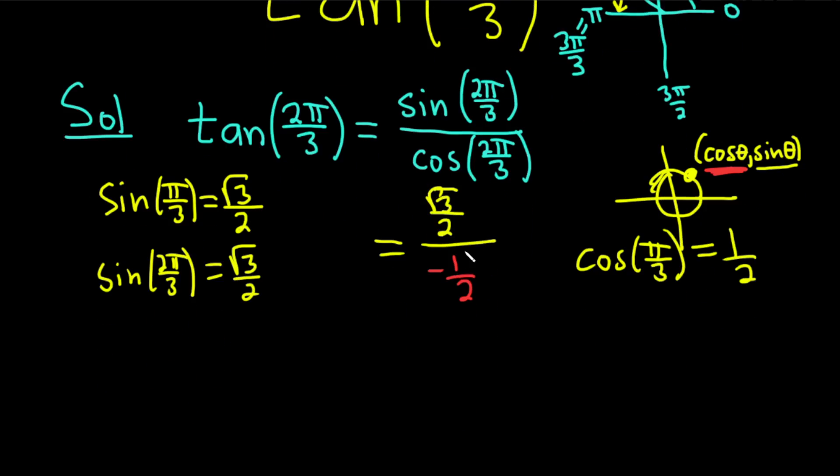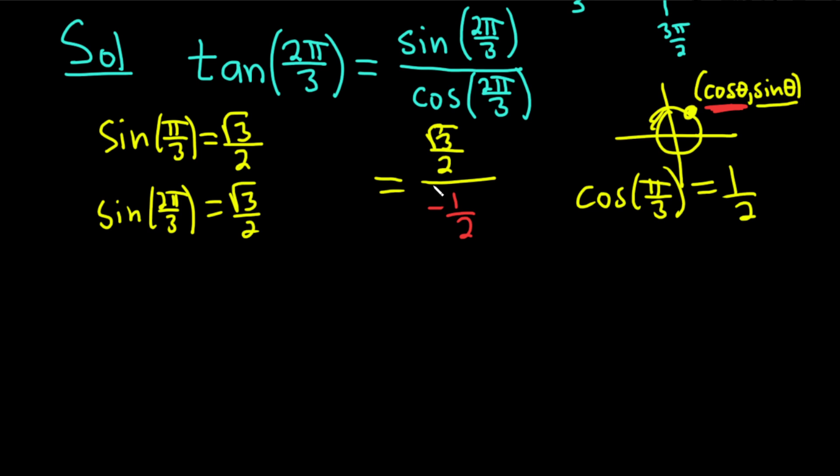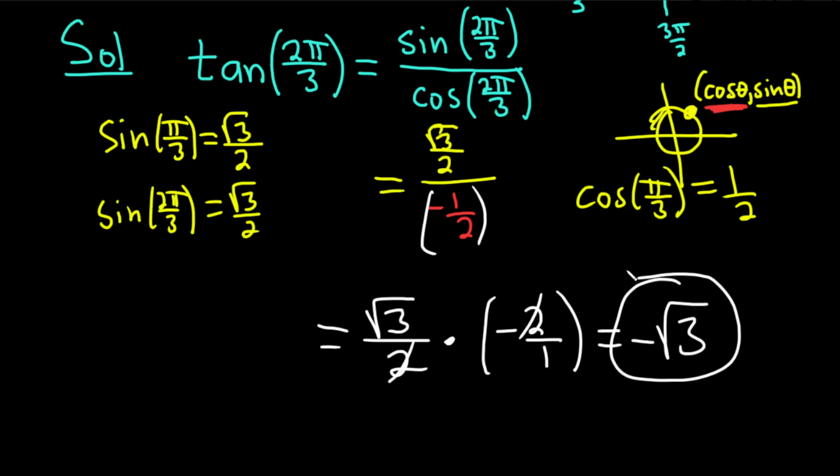So continuing in this way, we have the square root of 3 over 2 divided by negative 1 half. That's really the square root of 3 over 2 times the reciprocal, so negative 2 over 1. So the 2s cancel. So we just end up with negative root 3, and that will be the answer in this problem.